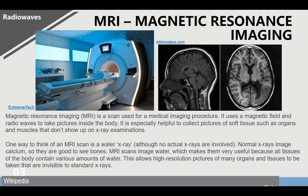MRI, or magnetic resonance imaging, is a scan used as a medical imaging procedure. It uses a magnetic field and radio waves to take pictures inside your body, and is especially helpful to collect pictures of soft tissue such as organs and muscles that don't show up on X-ray examinations.